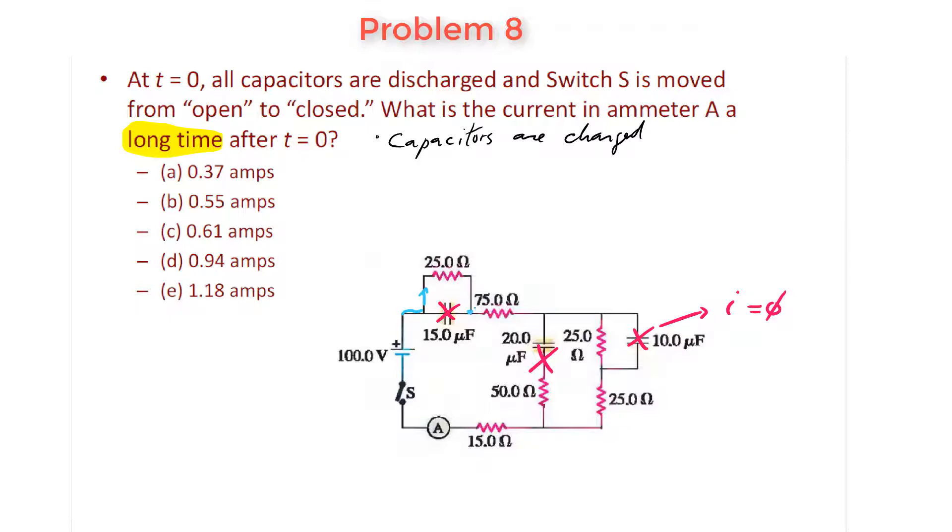There's a junction here, it has to flow through the 75 ohm. Once it gets to this junction, there's no current flowing through there because the capacitor is fully charged. It has to flow here, down this branch, down here through the 15 ohm resistor, and then it goes back through the battery.